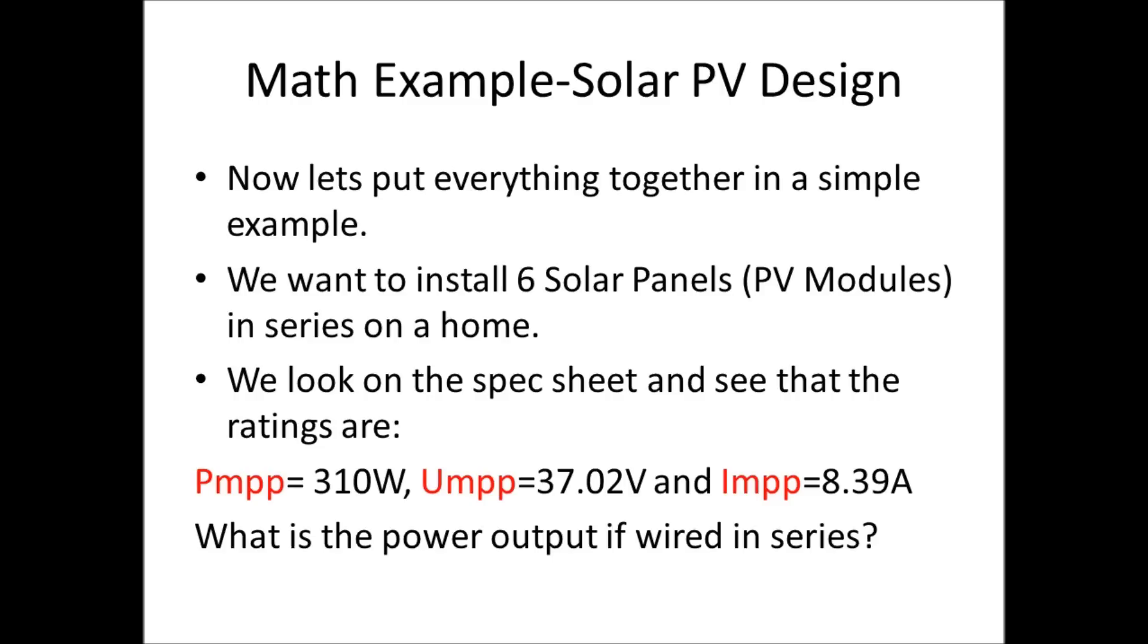Now let's put everything together in a simple example. We want to install six solar panels, aka PV modules, in series on a home. We look on the spec sheet and see that the ratings are 310 watts, 37.02 volts, and 8.39 amps. What's the power output if it's wired in series?